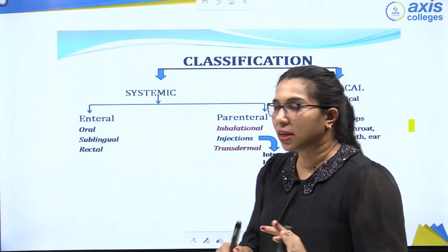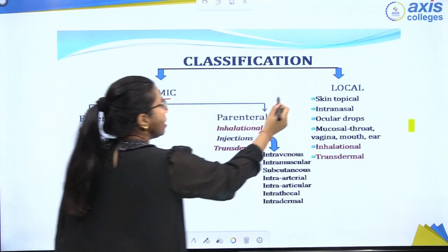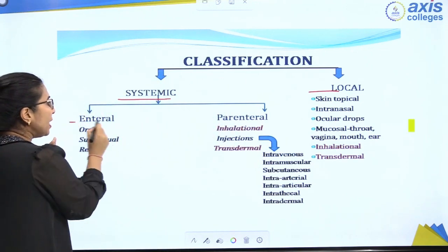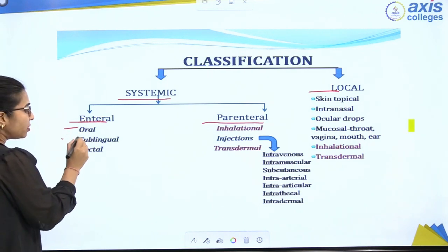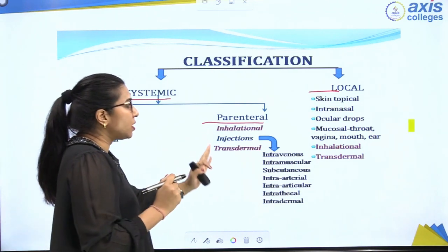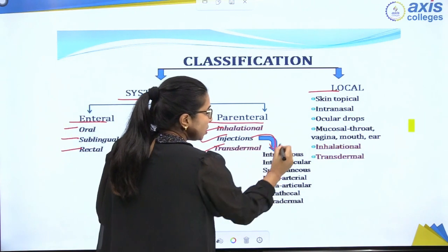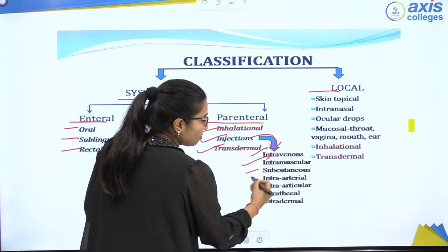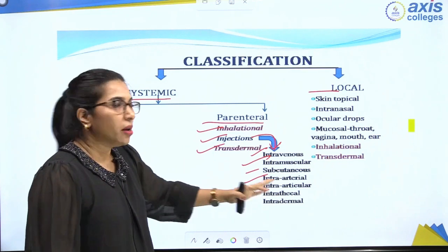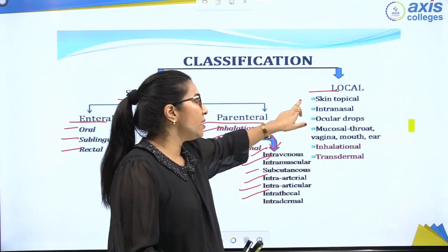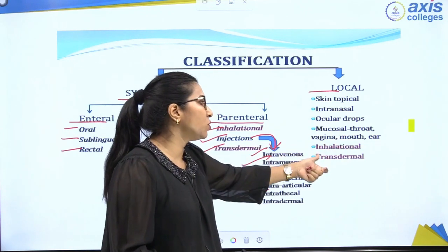To summarize the classification: the route of drug administration consists of two parts — systemic and local. Systemic is divided into enteral and parenteral. Enteral includes oral, sublingual, and rectal routes. Parenteral includes inhalation, injections, and transdermal. Injections are further divided into intravenous, intramuscular, subcutaneous, intra-arterial, intraarticular, intrathecal, intradermal, etc. Local routes include skin, intranasal, ocular, mucosal, vaginal, mouth, ear, inhalation, and transdermal.